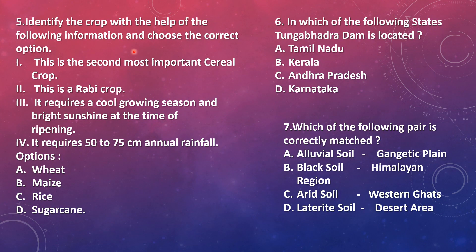Next: identify the crop with the help of the following information. This is the second most important cereal crop. It is a Rabi crop — grown from October to March. It requires a cool growing season and bright sunshine at the time of ripening. In November-December we have winter season, and near March the summer season starts. It also requires rainfall of about 50 to 75 centimeters.